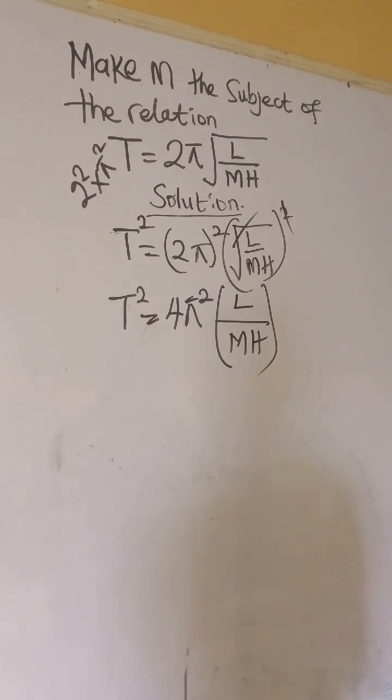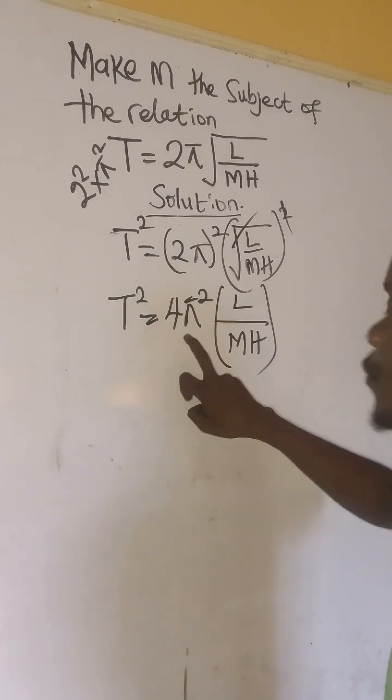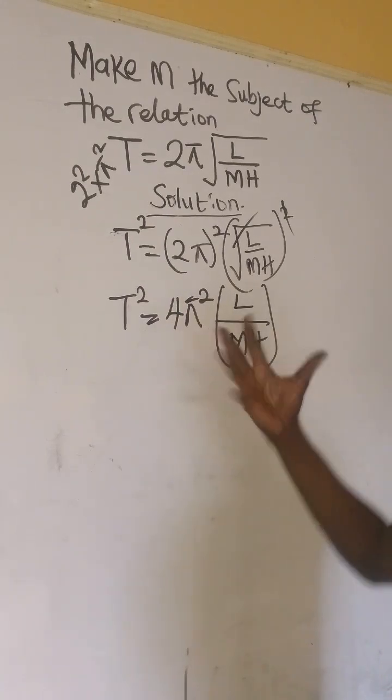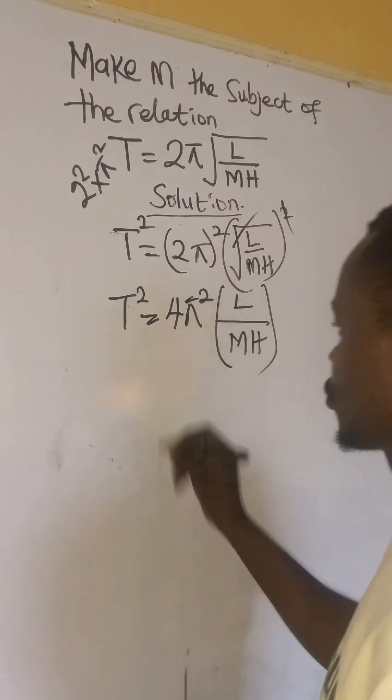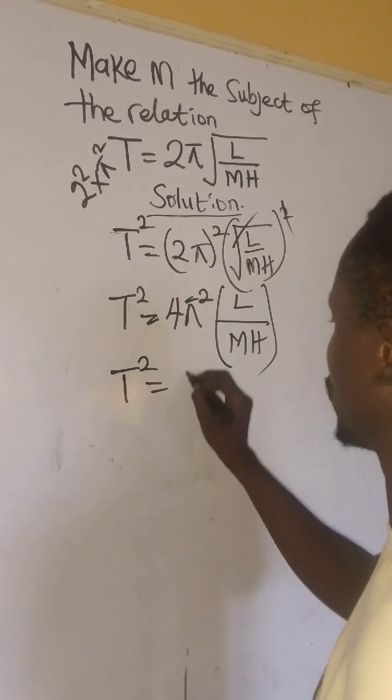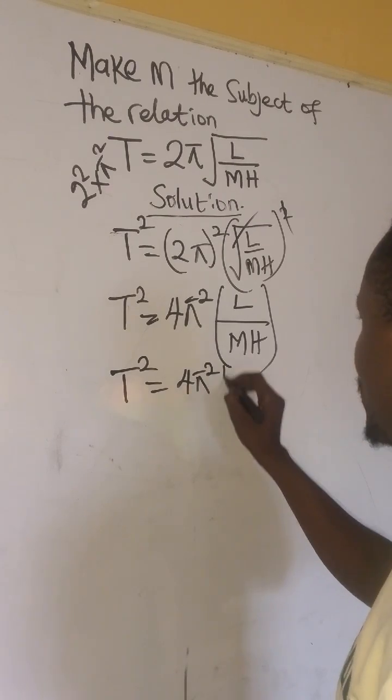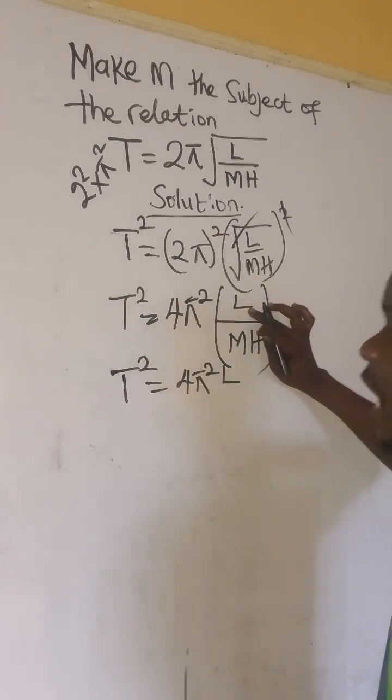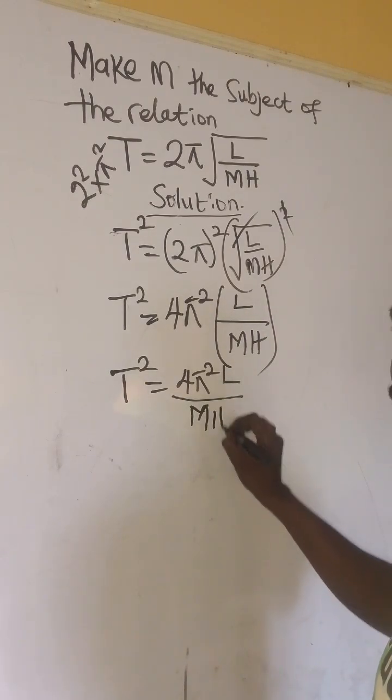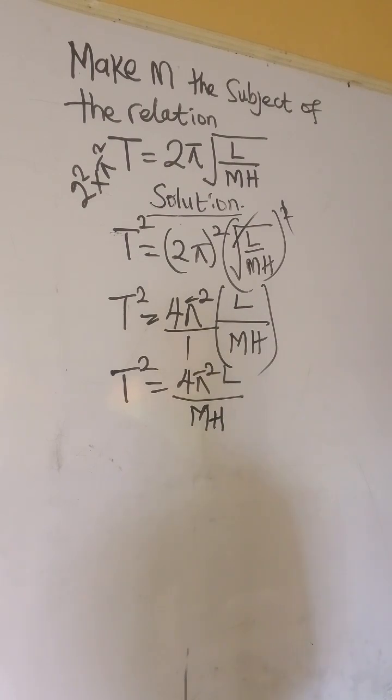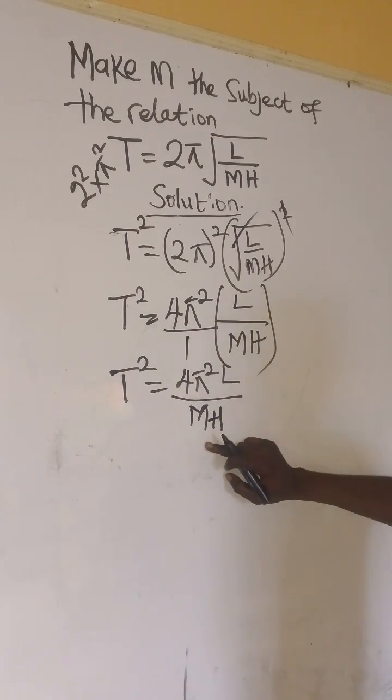So what do we do next? We can decide to divide both sides by 4π² or we can open the bracket. Let's open the bracket first. So we have T² = 4π²l/mh.